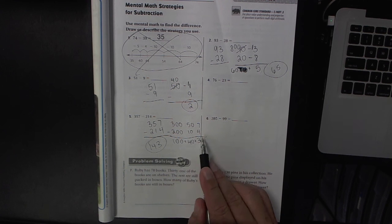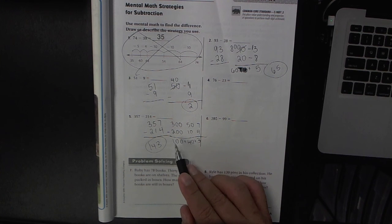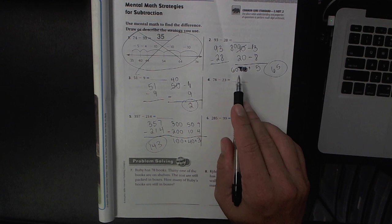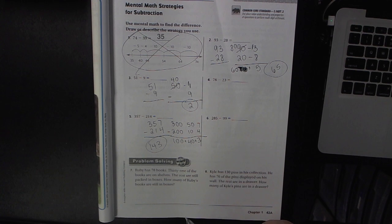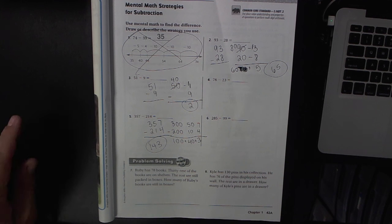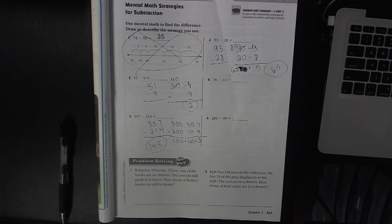Now hopefully when you get down here you're able to do these in your head. You can see that that's 143. Same thing up here, hopefully you can see that 60 plus 5 is 65. Well hopefully this helps you with lesson 1.9 using the break apart strategy.